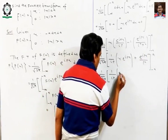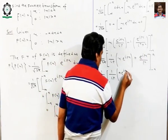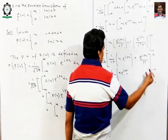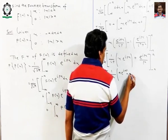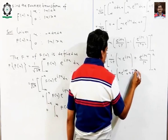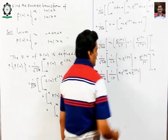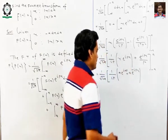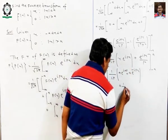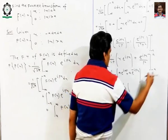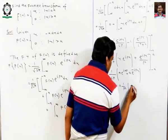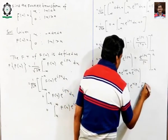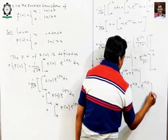Substituting the limits: a times e to the power ia minus, and minus times plus, a times e to the power minus ipx, so x equals minus a, plus 1 over p² times (e to the power aip minus e to the power minus aip).